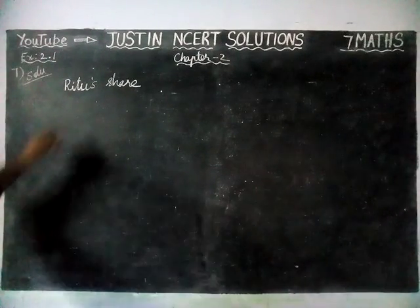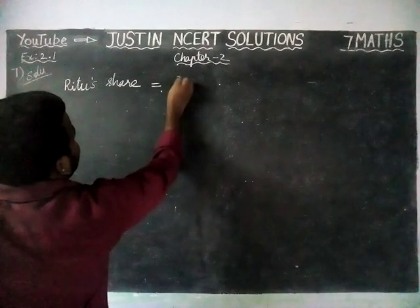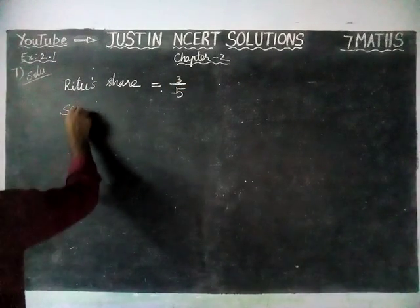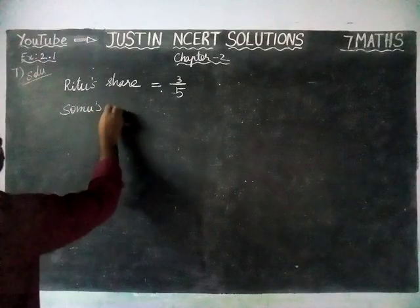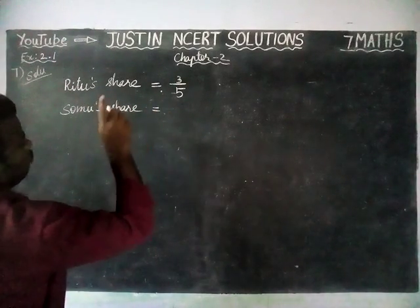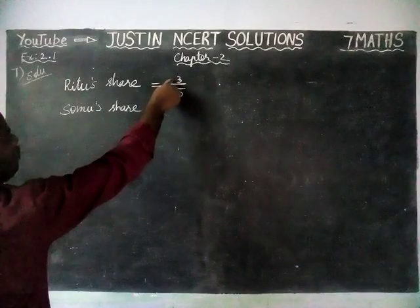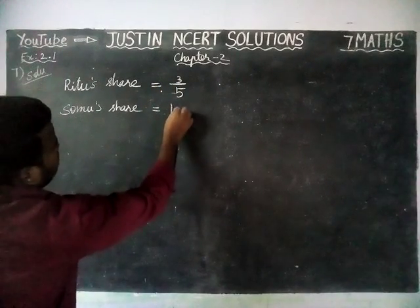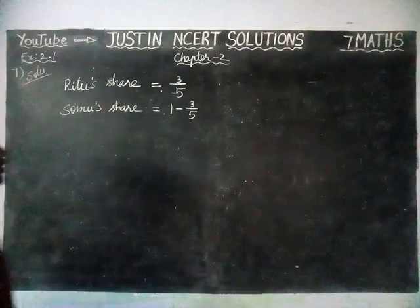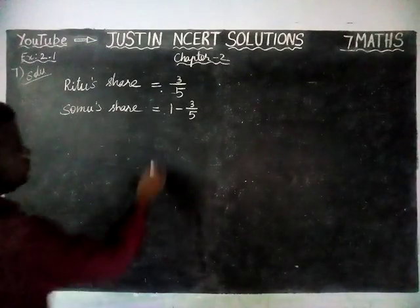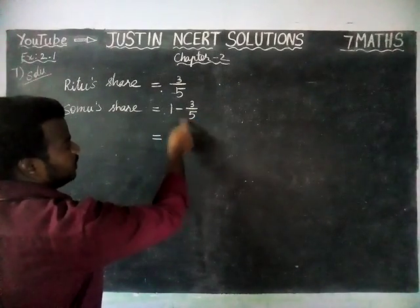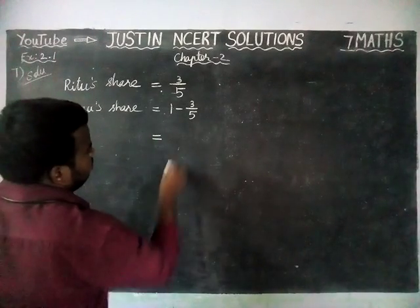From an apple, Ritu's share is equal to 3/5 part of an apple. Sommu's share is equal to: from 1 apple, Ritu already ate 3/5 part of the apple, so 1 minus 3/5 part of an apple. Now we are going to find Sommu's share.